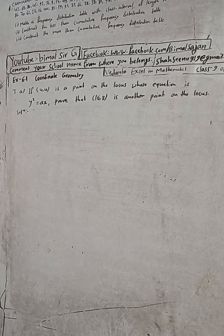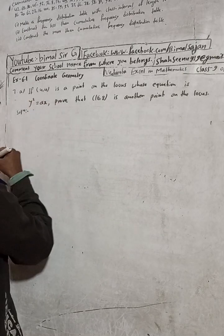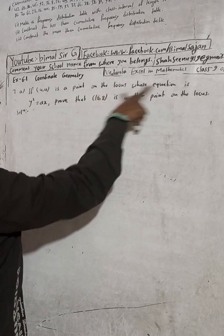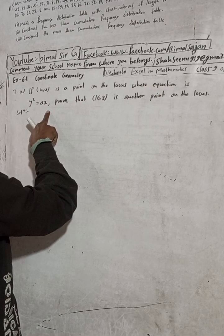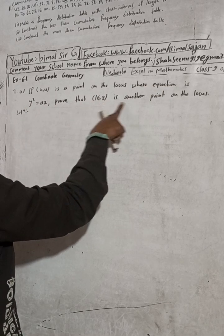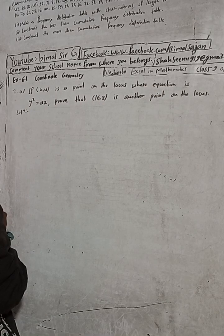Hi class 9 and 10 students, welcome back to Bhimalsarji YouTube channel. This is question number 7, a demand of one of the YouTube subscribers. The question is from exercise 6.1, coordinate geometry, Vedant Excel in optional mathematics class 9. Here it is given: if (4, 4) is a point on the locus whose equation is y² = ax, prove that (16, 8) is another point on the locus.